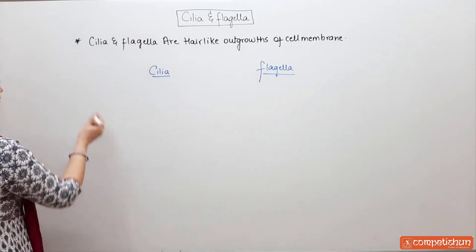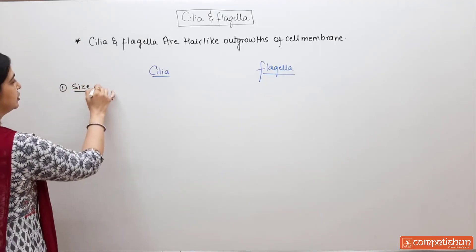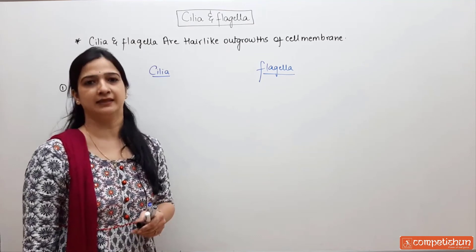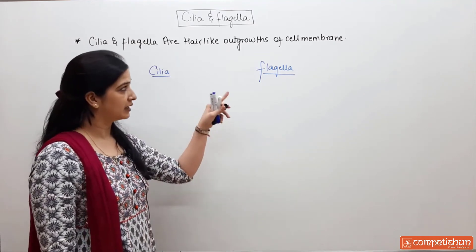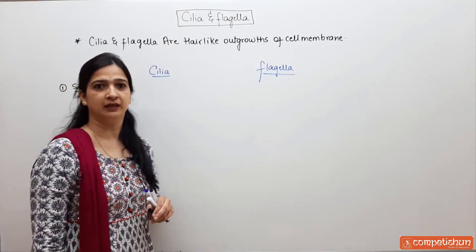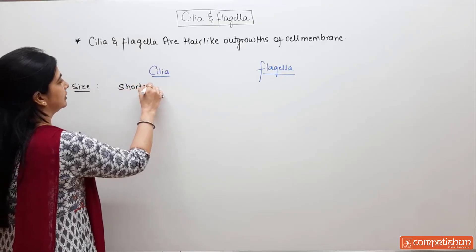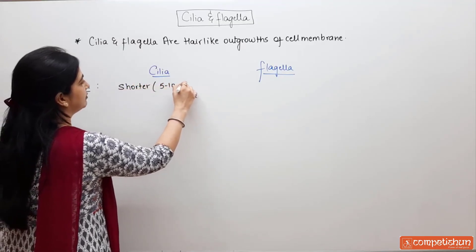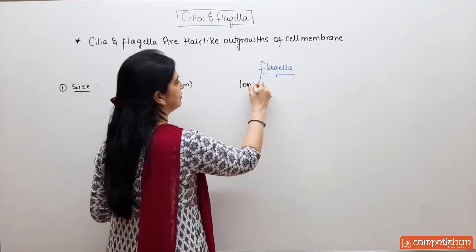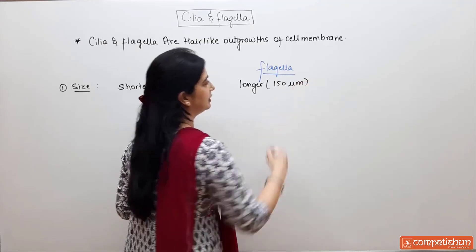First, when we consider size: cilia are smaller in size — they are 5 to 10 micrometers in length. Flagella are comparatively longer, about 150 micrometers in length.